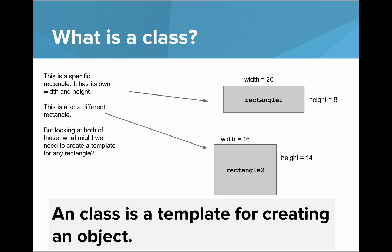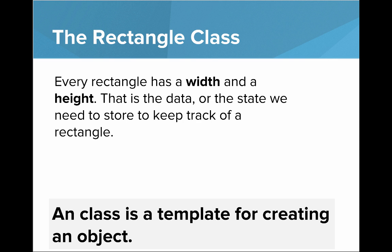And now we have rectangle two. That's a different rectangle. That's a different object. It has a width of 16 and a height of 14. But looking at both of these, they're both rectangles, and we can find some similarities. The question we can think about is, what might we need to create a template for any rectangle? We see that every rectangle has a width and a height. That's the data. That's the state we need to store to keep track of a rectangle.